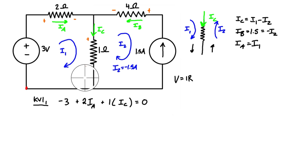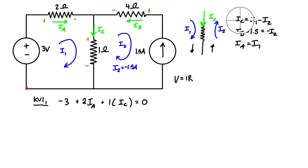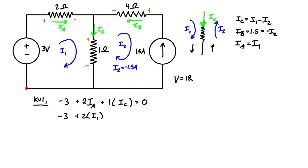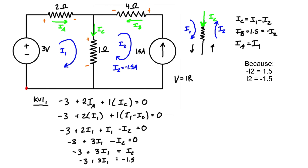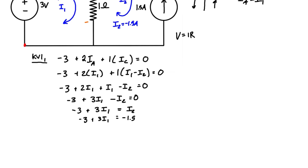Now we substitute Ia and IC for the mesh currents. We have Ia equals I1 and IC equals I1 minus I2. Rewriting: negative 3 plus 2·I1 plus 1·(I1 minus I2) equals zero. Simplifying: negative 3 plus 3·I1 minus I2 equals zero. Since I2 equals negative 1.5, we get negative 3 plus 3·I1 plus 1.5 equals zero, so 3·I1 equals 1.5, and therefore I1 equals 0.5 amps.